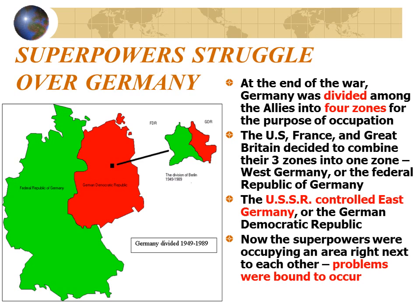The superpowers almost immediately struggled over control of Germany. At the end of the war, Germany was divided among the allies — England, France, the Soviet Union, and the United States — into four zones of occupation. The U.S., France, and Great Britain combined their three zones into Western Germany, or the Federal Republic of Germany. The Soviet Union controlled East Germany, called the German Democratic Republic. Now the superpowers were occupying areas right next to each other, and problems were bound to occur.